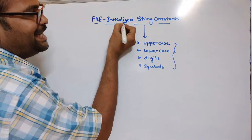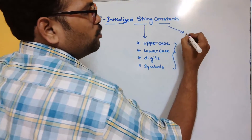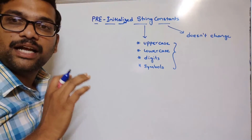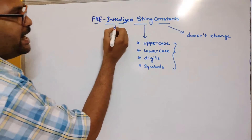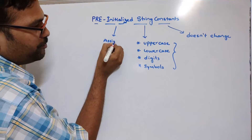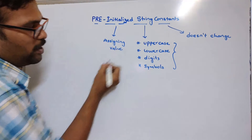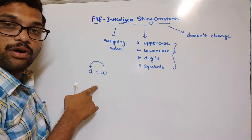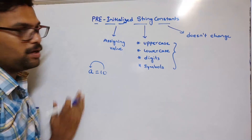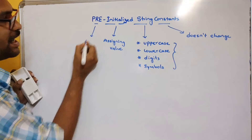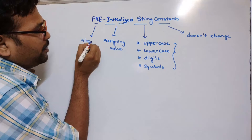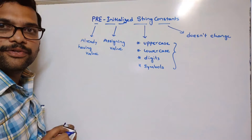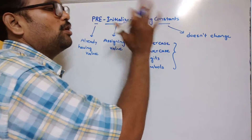We are calling these 'pre-initialized constants.' Constants means a value which doesn't change — once the value has been initialized, we can't update or change it. Initialized means assigning a value: for example, a = 10 means 10 is a value stored in variable a. Pre-initialized means already having a value.